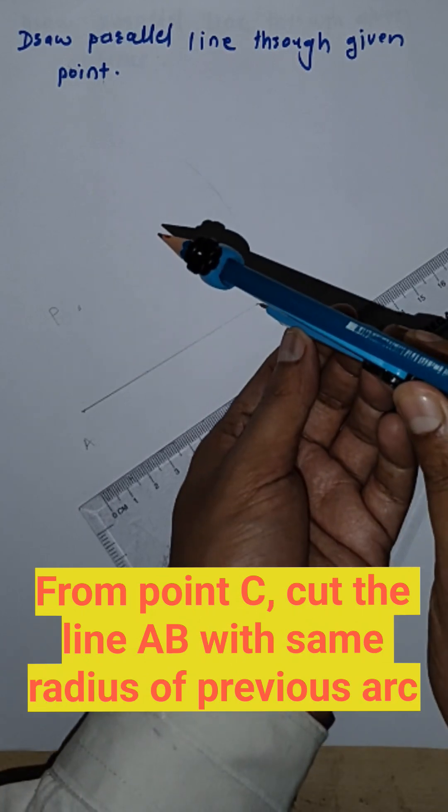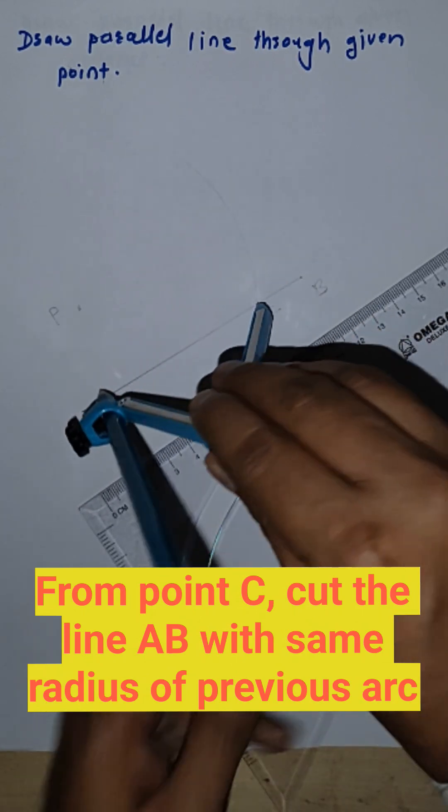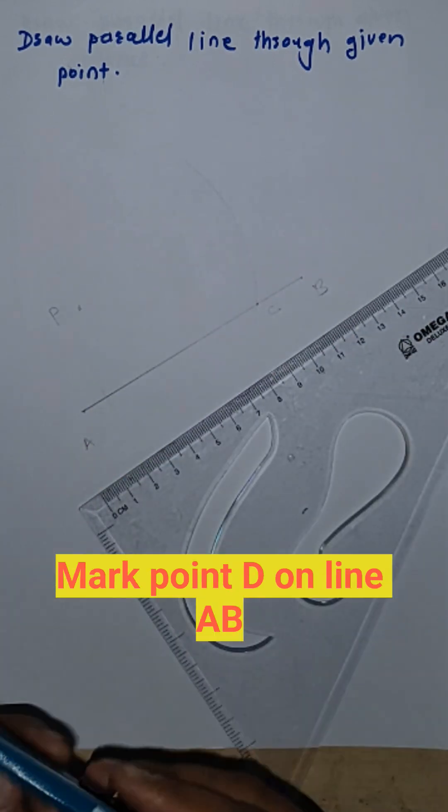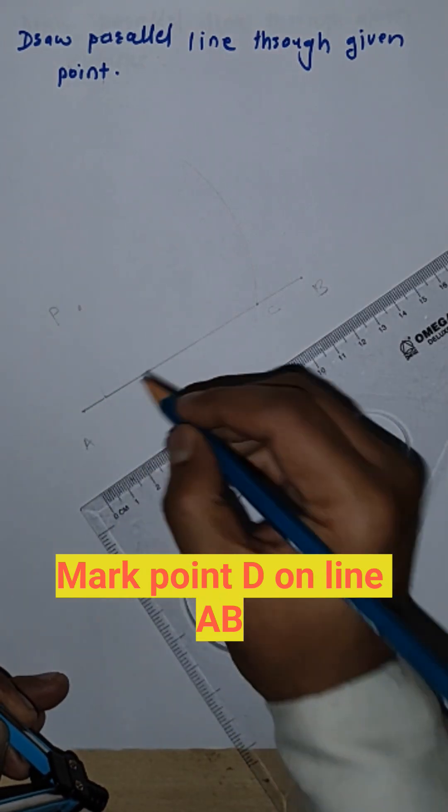From C point, cut AB line. We will get D point.